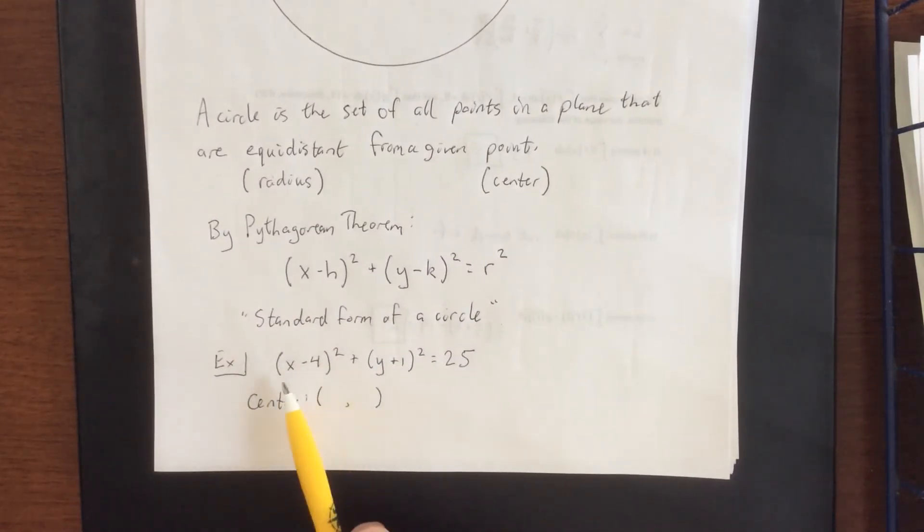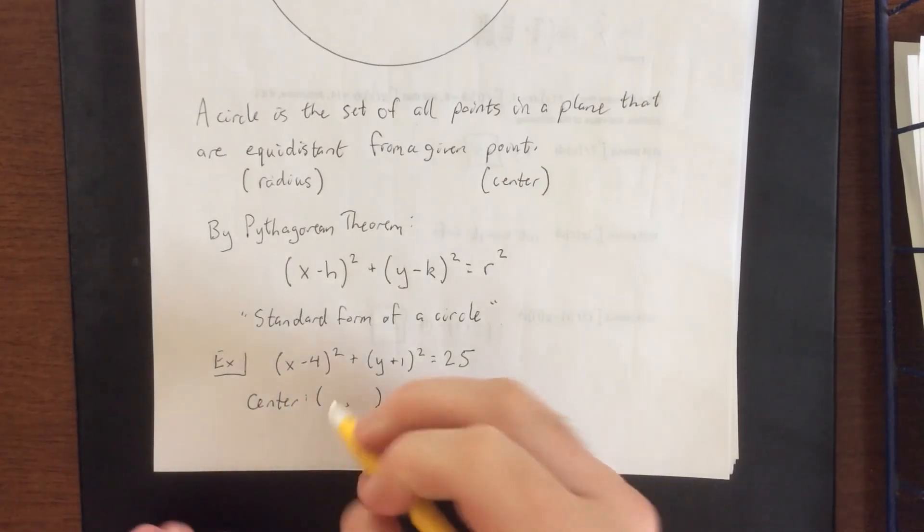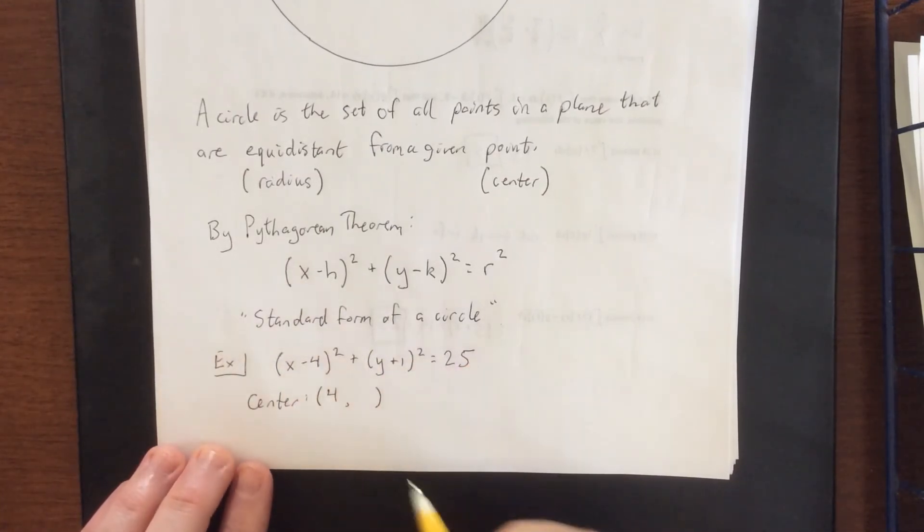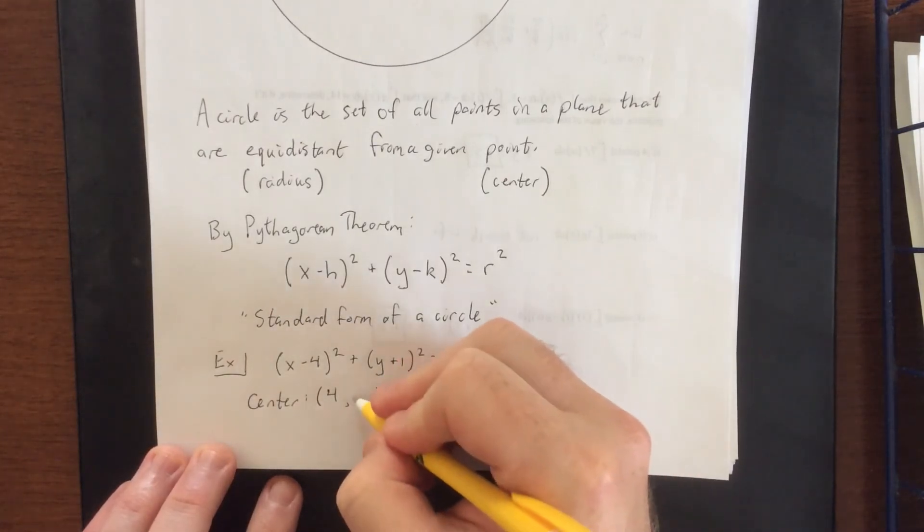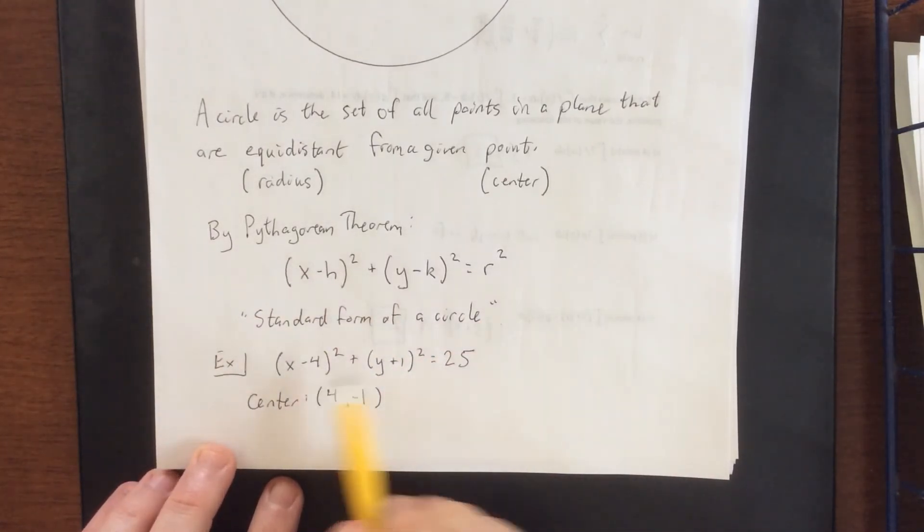The number being subtracted from X in X minus 4 would be positive 4, but if I say Y plus 1, that would technically be Y minus negative 1. Basically, whatever number you see inside the parentheses, you're doing the opposite of that.